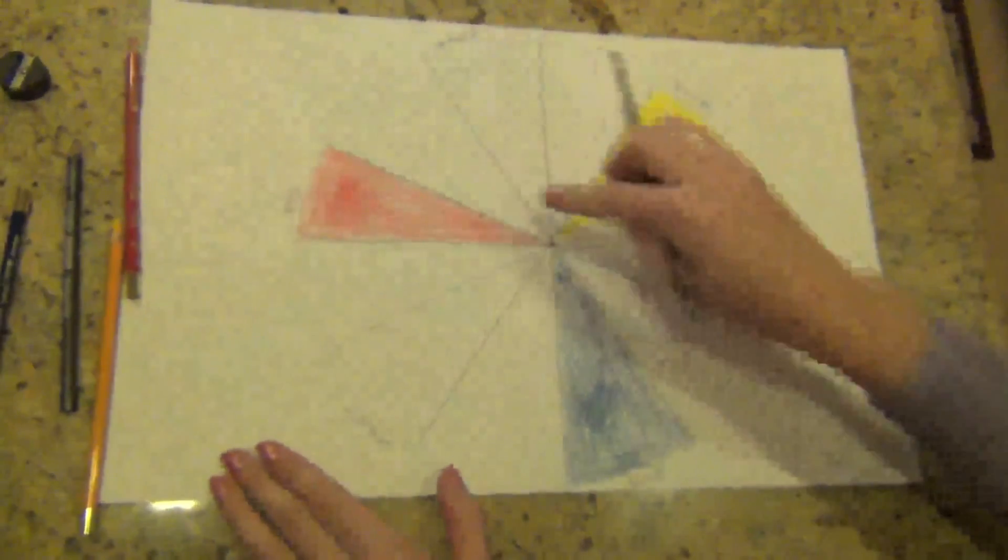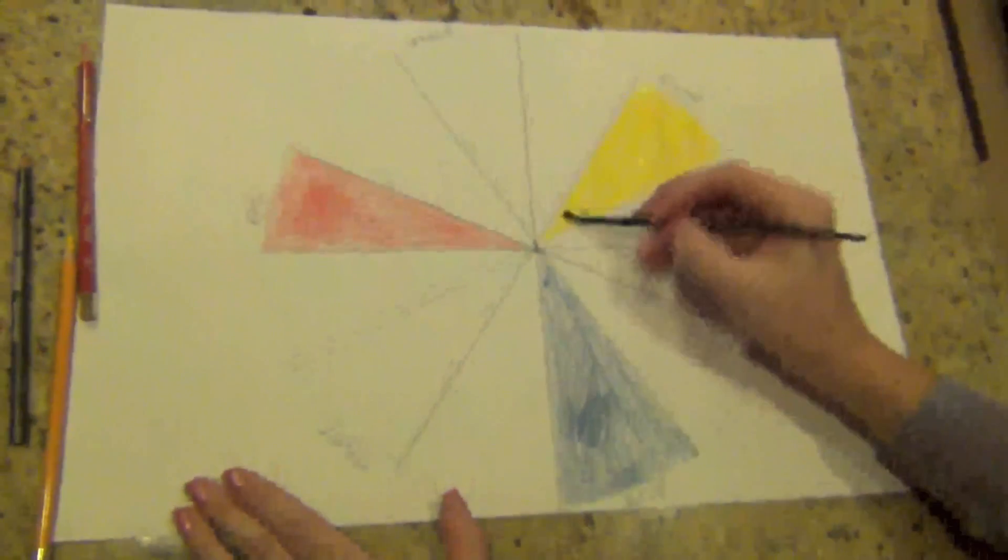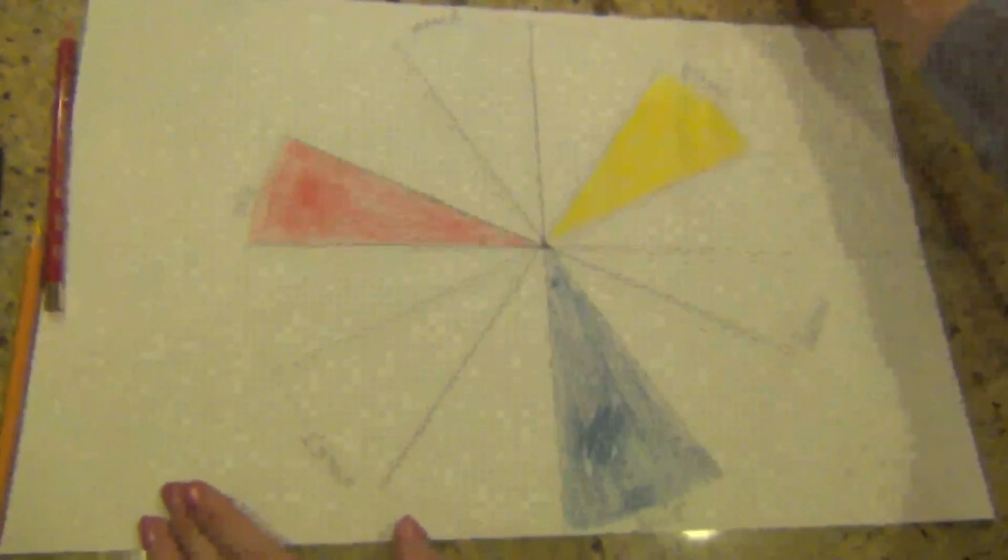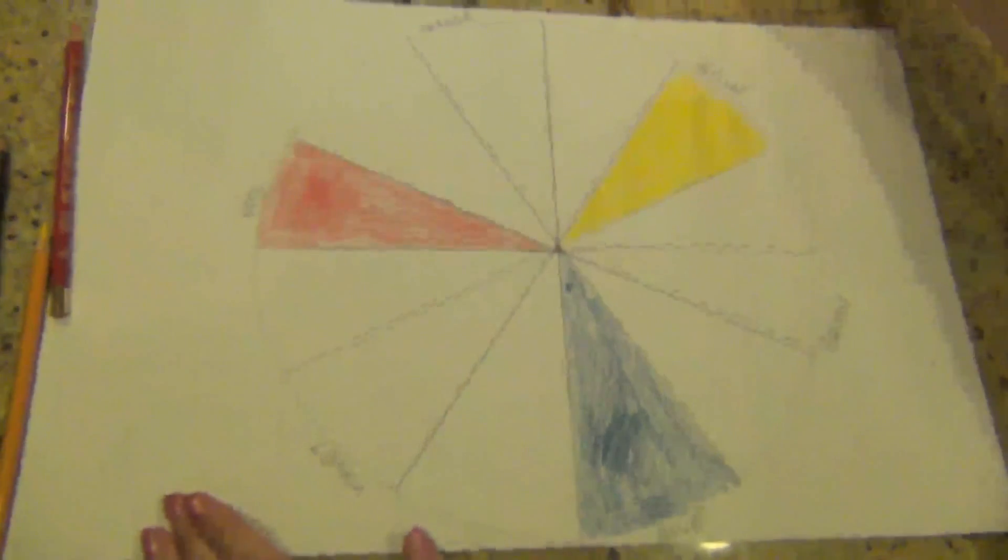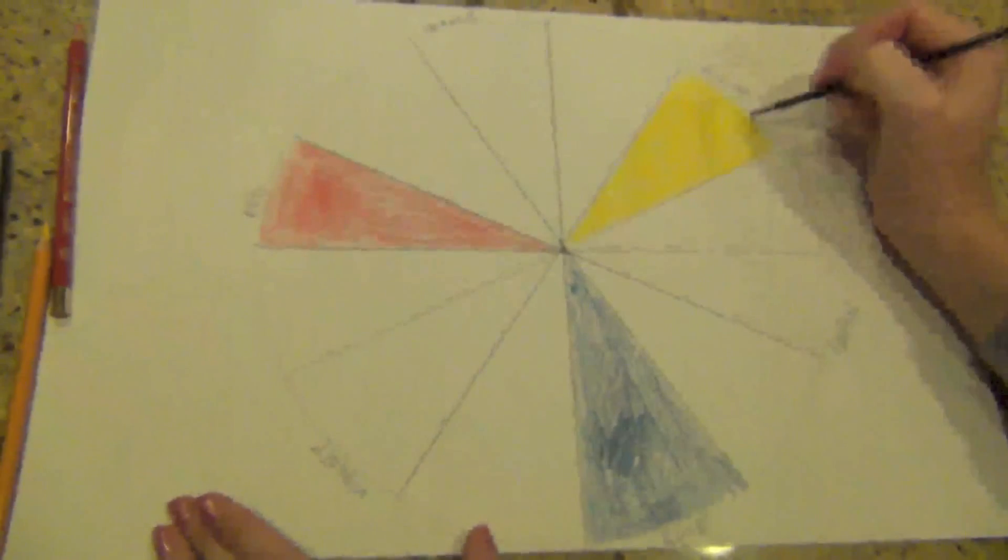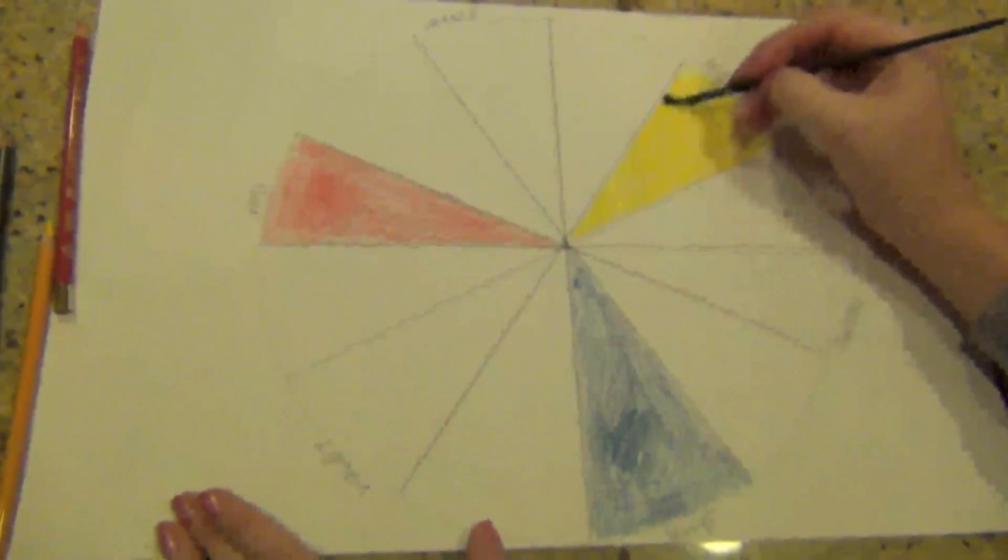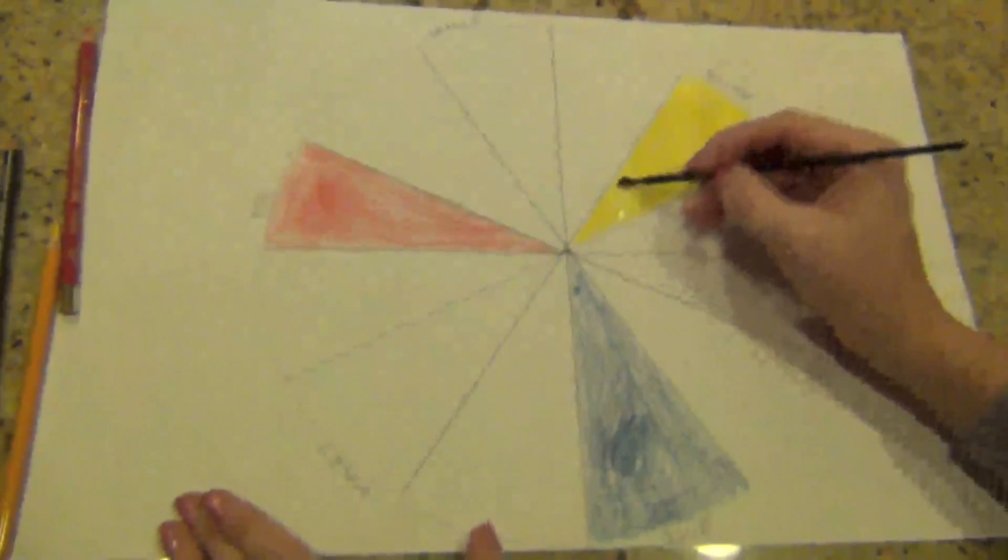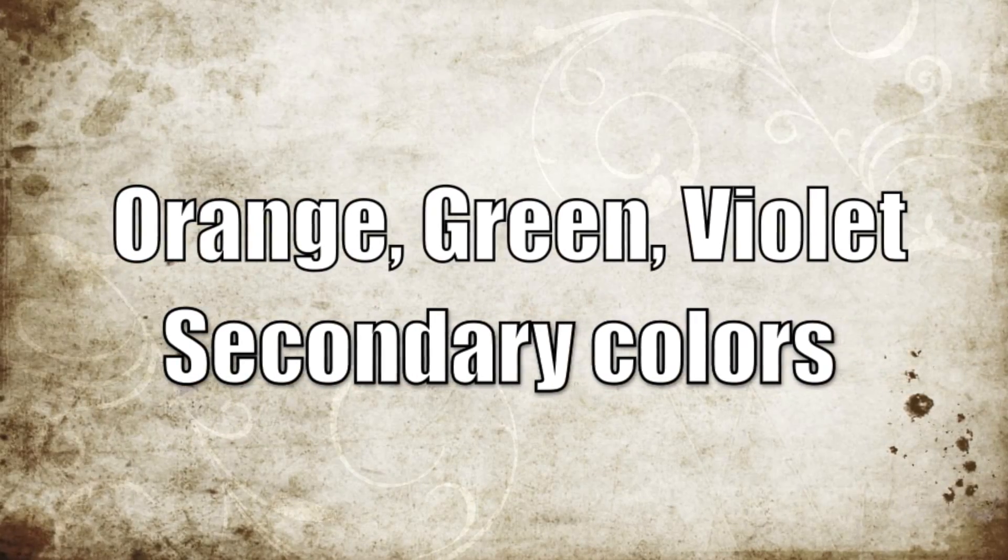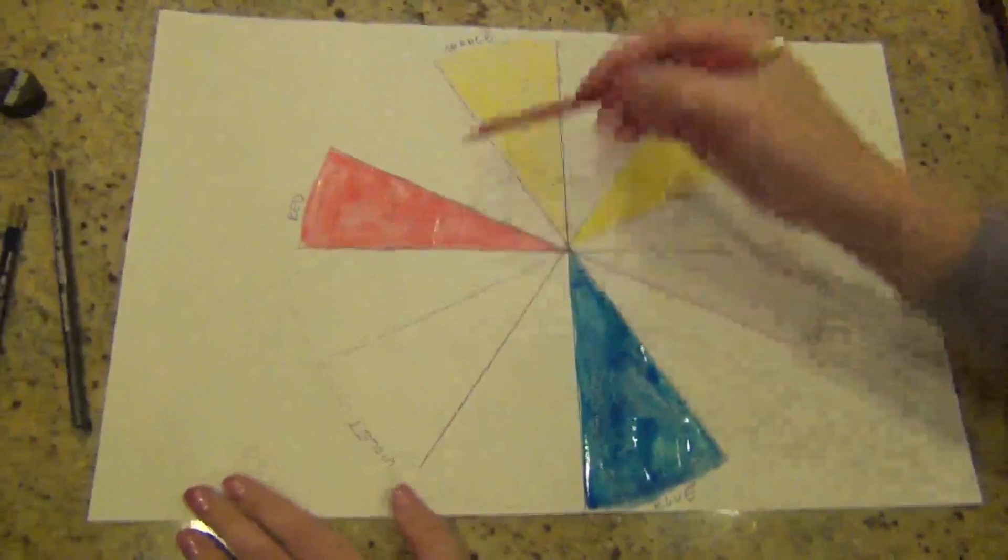All right, so I've colored in my primary colors with my watercolor pencil. And now I'm coming in with the watercolor brush and just a little tiny bit of water. You don't want too much. So I just have a little bit of water on my brush, so it's damp. And what I'm doing is I'm blending in the color. I started with yellow, which is very important advice for you. Always start with your lighter colors.